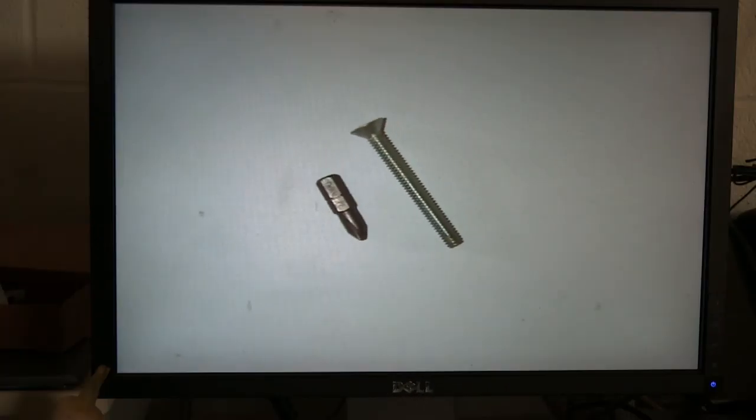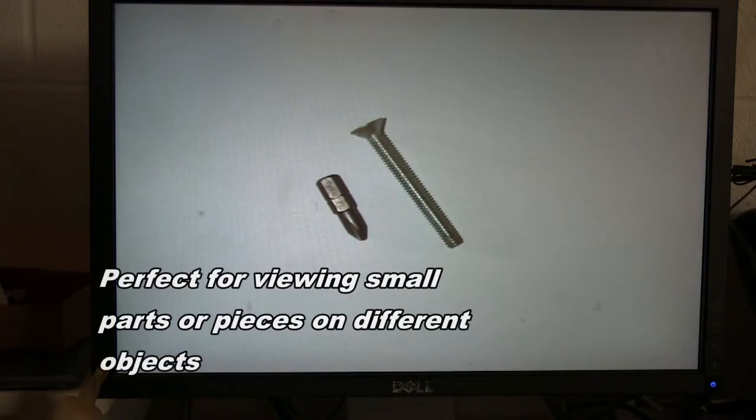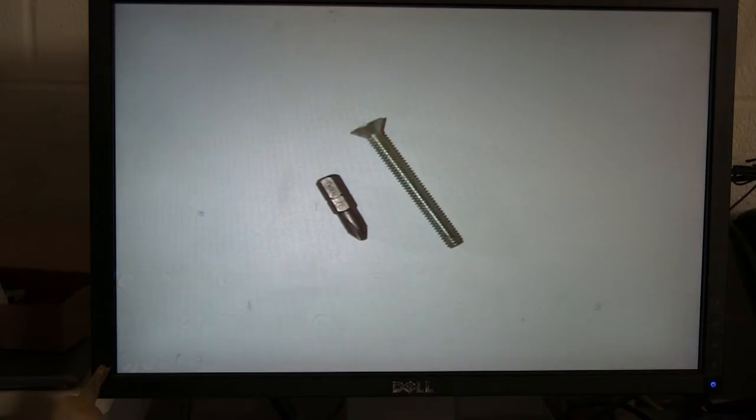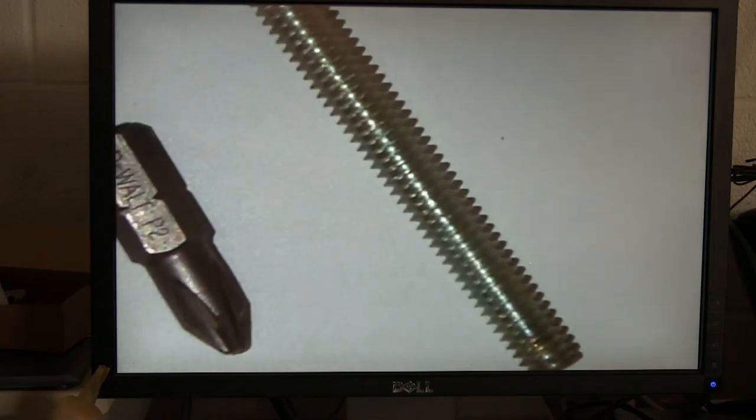The document camera's zoom in and out feature allows students to get a closer look at different objects they may be working with in the classroom. For example, here there is a screw with different thread sizes along with a driver bit for the screw, so students can see and feel the threads on the screw as well as the bit on the driver.